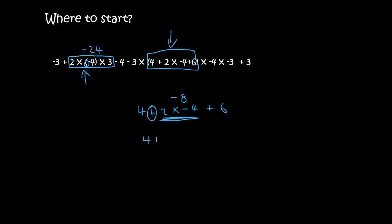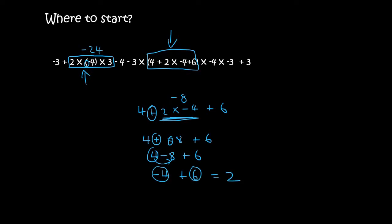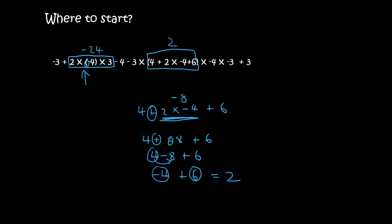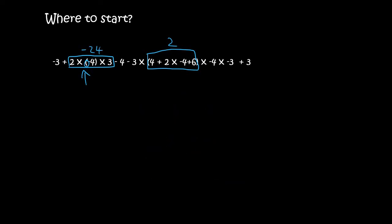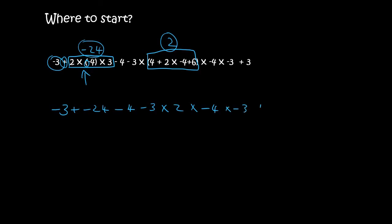So then we have four plus minus eight plus six. A plus and a minus is a minus. If you have four rand and then you owe people eight rand, then you have minus four rand. If you owe people four rand and then someone gives you six rand, then you have two rand. So this entire bracket is two. The reason I did that was because it was in a bracket, so you can do a bracket and it won't affect the rest of your sum. So I could technically go rewrite everything now: minus three, then there's a plus, then I've got negative twenty-four, then it's minus four minus three times — and this whole answer is two times minus four times minus three plus three.